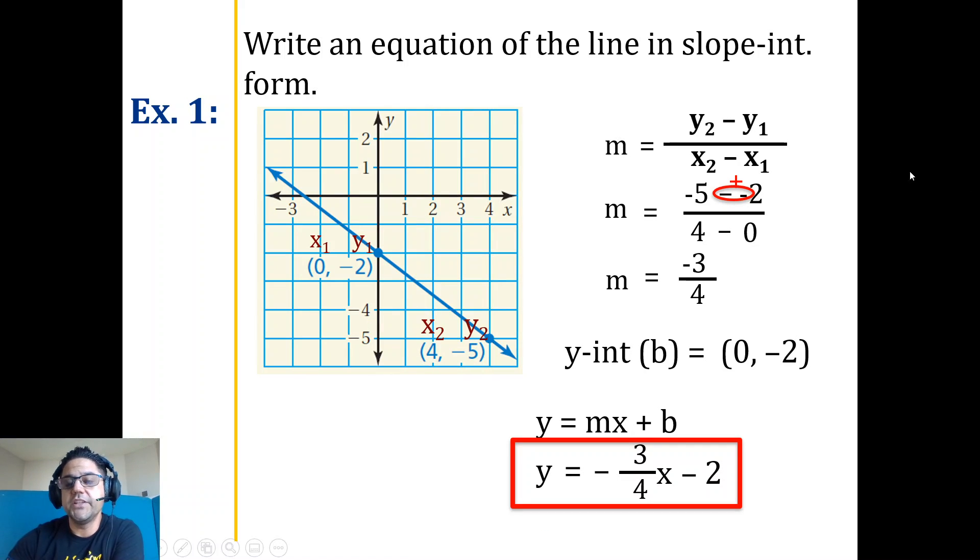Again, if you wanted to count, it would be down 1, 2, 3. You can make your right triangle. Right 1, 2, 3, 4. Again, down 3, right 4. That is always a helpful method as well, especially when you're given a graph. Using your slope formula, though, that could be used essentially any time.